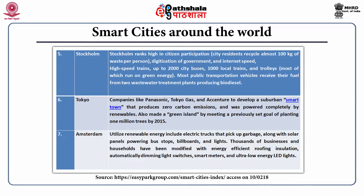The sixth smart city is Tokyo, where companies like Panasonic, Tokyo Gas and Accenture developed a suburban smart town that produces zero carbon emissions and is powered completely by renewables. Tokyo also achieved the goal of planting one million trees by 2015. The seventh is Amsterdam, which utilizes renewable energy including electric trucks for garbage collection, solar panels powering bus stops, billboards and lights. Thousands of businesses and households have been modified with energy-efficient roofing insulation, automatically dimming light switches, smart meters and ultra-low energy LED lights.